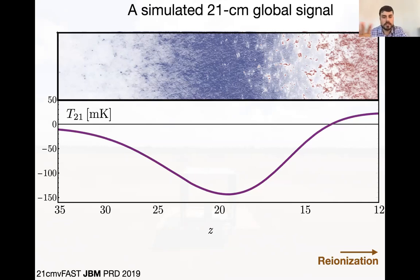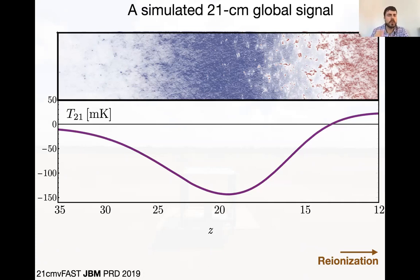I chose some parameters here — we don't know what the astrophysics of the first galaxies is, so I chose what we think are reasonable. You can play with the parameters and change the position and the depth a little bit, but not dramatically. This progression of nothing, then blue, then red is pretty stable as far as we know. Any questions so far about this?